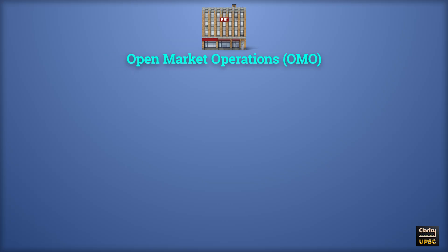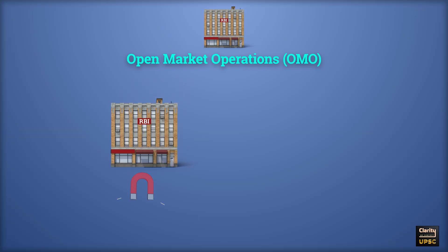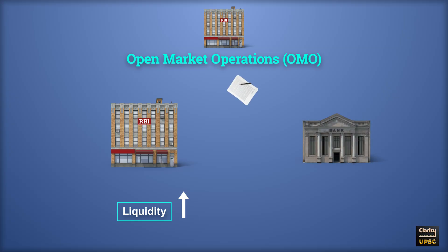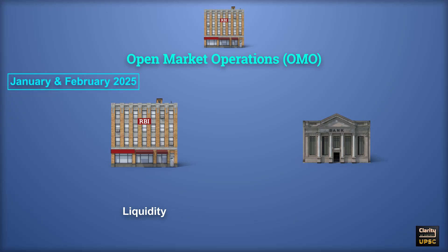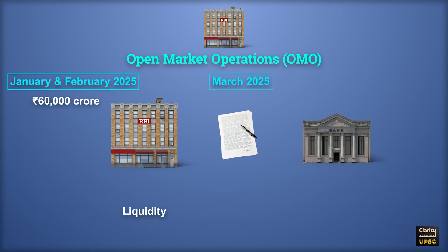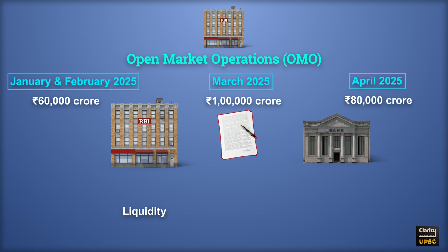Next is Open Market Operations or OMO. It is the process through which RBI controls liquidity in the banking system. When RBI wants to increase liquidity, it buys government securities from banks and gives cash in return. When it wants to decrease liquidity, it sells these securities and sucks out money. In January and February 2025, RBI bought government securities worth 60,000 crores. In March 2025, RBI injected 1 lakh crore rupees; and in April 2025, it gave another 80,000 crore rupees to banks by buying securities, thereby increasing liquidity to help banks lend more.